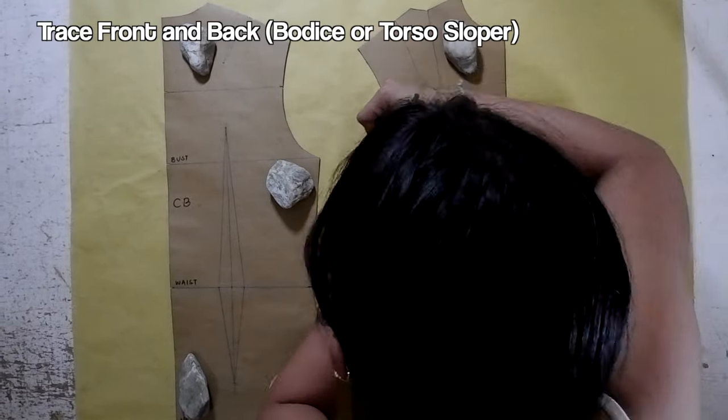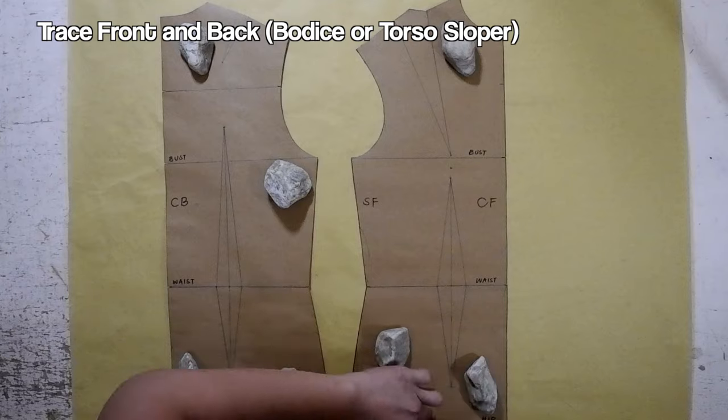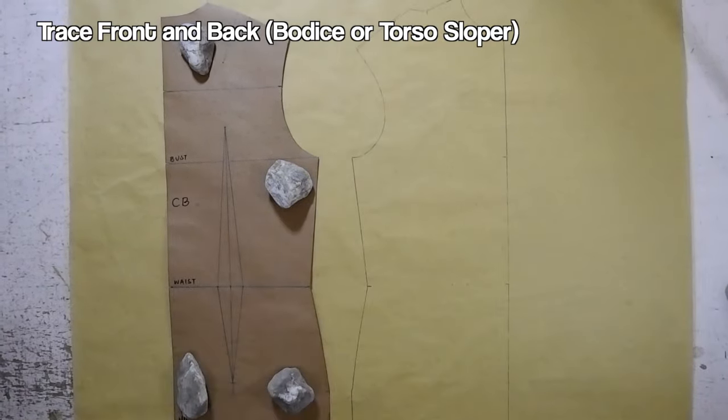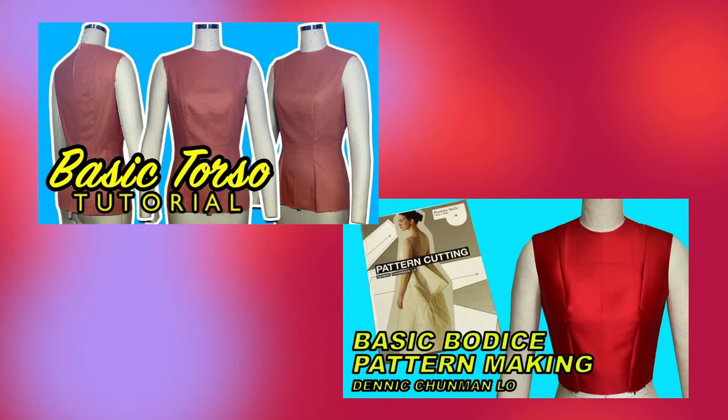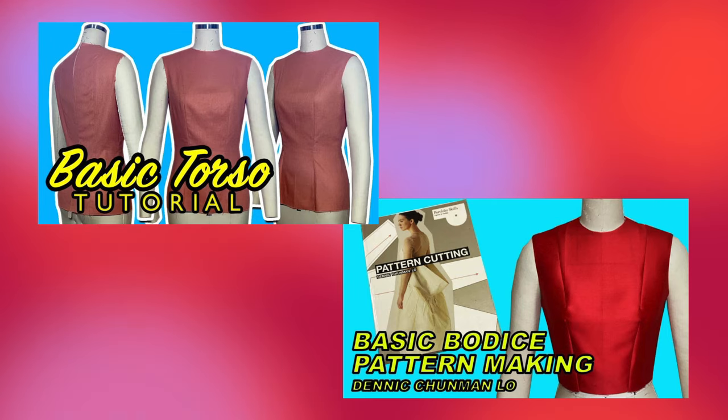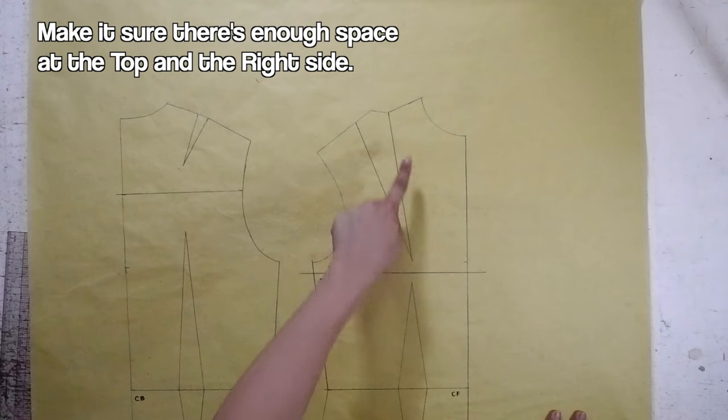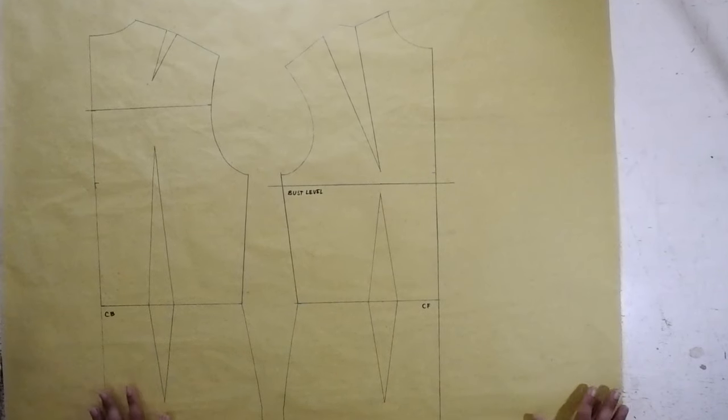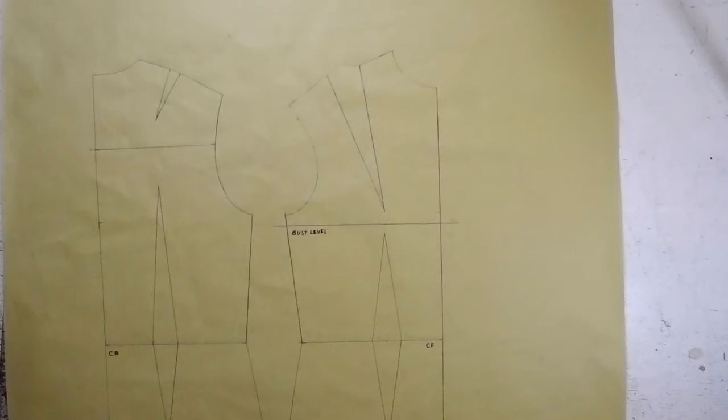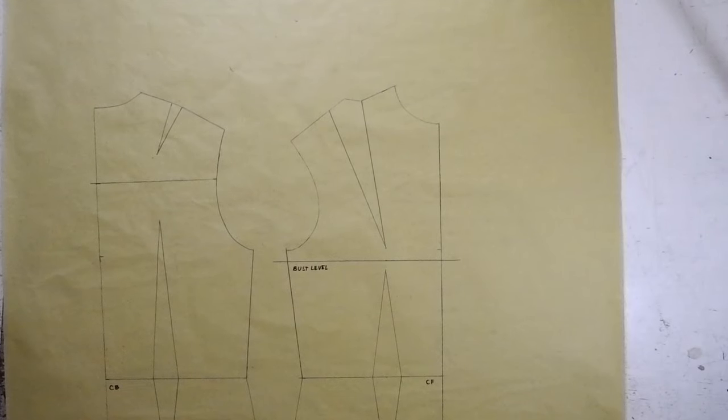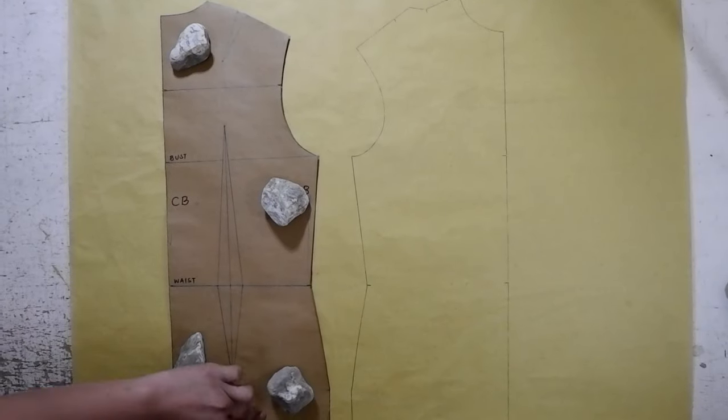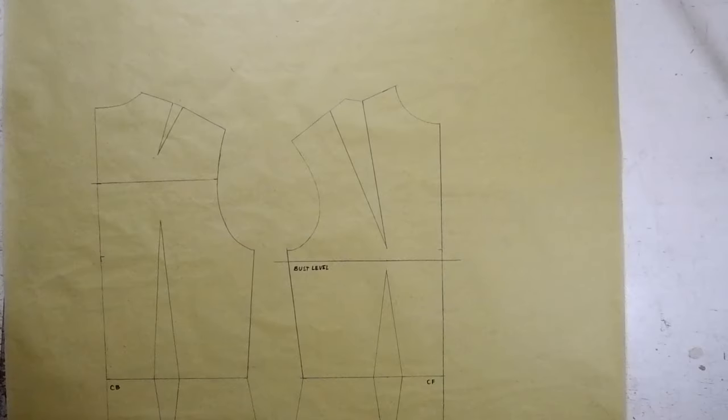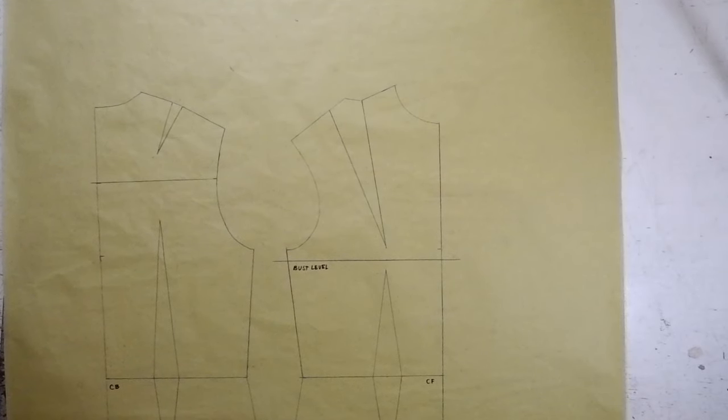First, let's trace our front and back bodice torso or basic bodice. By the way, to those who are new to my channel, I have a separate basic torso and basic bodice tutorials, and I will put the links up here. Anyway, make sure that there's enough space on the top and the right side where we've traced our front basic torso or bodice. We need enough space to draft the lapel and the collar. Once we are done tracing the front and back slopper, we can now proceed to the next step.